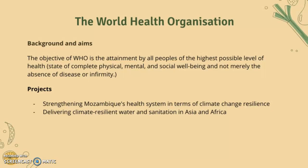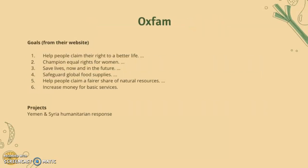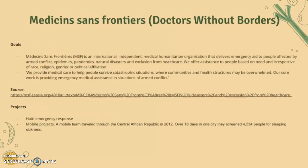Oxfam: the goals from their website are to help people claim a right to a better life, champion equal rights for women, save lives now and in the future, safeguard global food supplies, help people claim a fair share of natural resources, and increase money for basic services. Projects relating to food supply include the Yemen and Syria humanitarian responses.